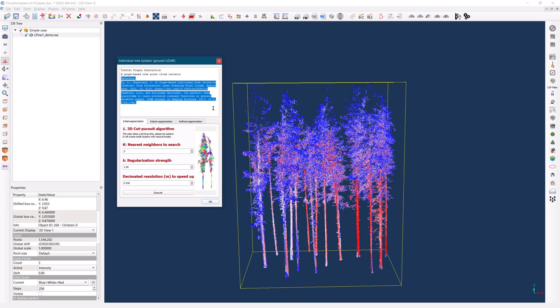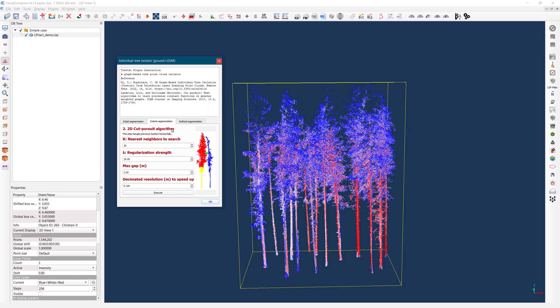The TreeISO algorithm employs three levels of segmentation: initial segmentation and intermediate segmentation. For this initial test, it is recommended to keep the default parameters as they have been optimized for this specific point cloud dataset.